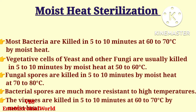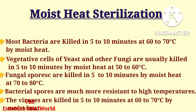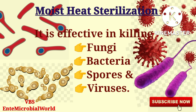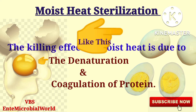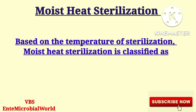Viruses are killed in 5 to 10 minutes at 60 to 70 degrees Celsius by moist heat. One of the most notable things about moist heat sterilization is that it is effective in killing fungi, bacteria, spores, and viruses. The killing effect of moist heat is due to the denaturation and coagulation of proteins.